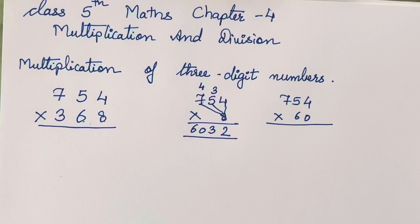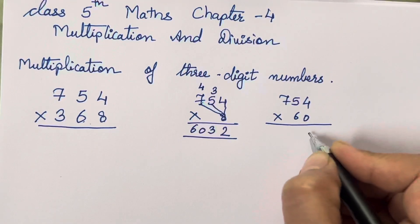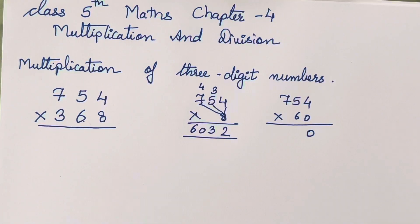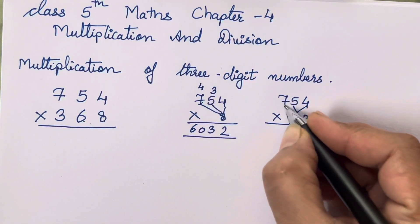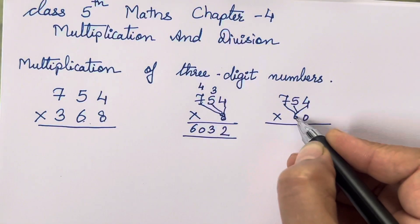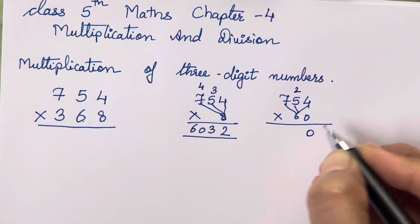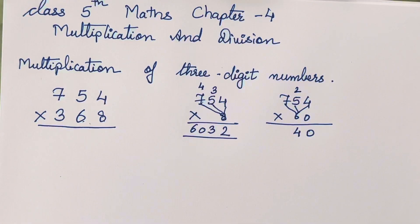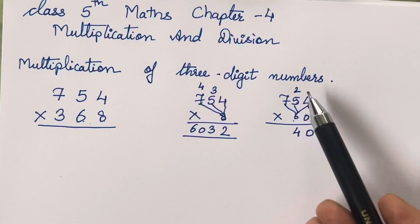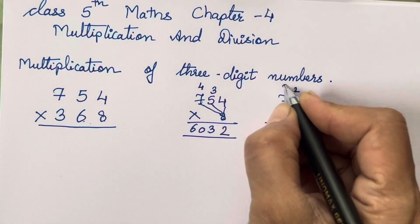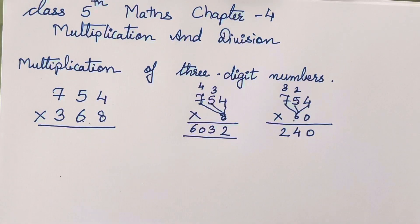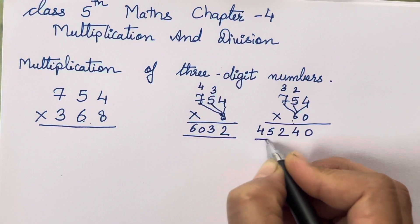Now let's multiply. First we write 0 as it is, because we have to take 0 by default. Now multiply in this pattern: 6 × 4 = 24. 6 × 5 = 30, plus 2 = 32. 6 × 7 = 42, plus 3 = 45. So your second partial product is 45240.